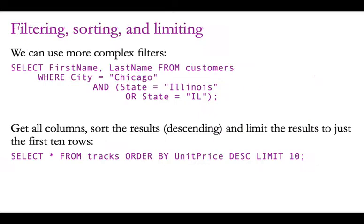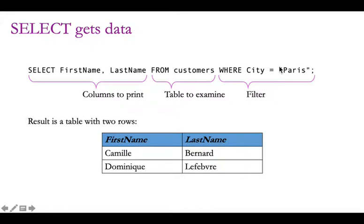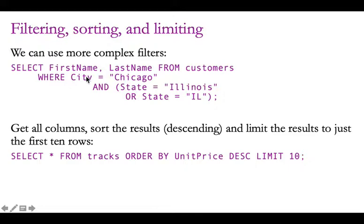In addition to simple filters, we can also have more complex filters. In this case, we're doing the exact same query except instead of checking city equals Paris, we have city equals Chicago AND state equals Illinois or the abbreviation IL, within parentheses. So this whole second part has to be true — it has to be either Chicago and Illinois written out for the state, or Chicago and the state abbreviated as IL.